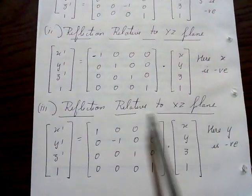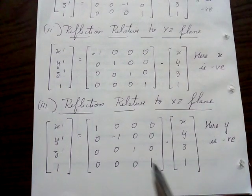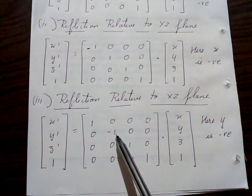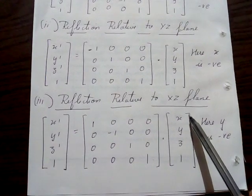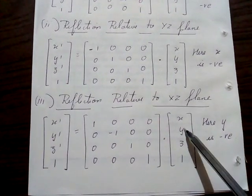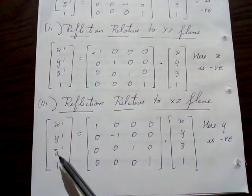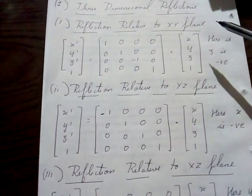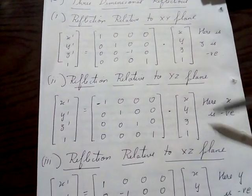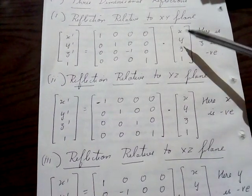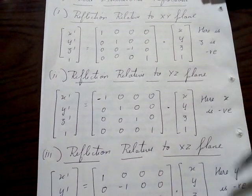When doing reflection relative to the XZ plane, all diagonals will be one except for Y — Y will be minus one. The old coordinates are X, Y, Z and the new coordinates are X dash, Y dash, and Z dash. So for reflection along the XY plane, YZ plane, and XZ plane, you make use of the respective matrices for those planes.